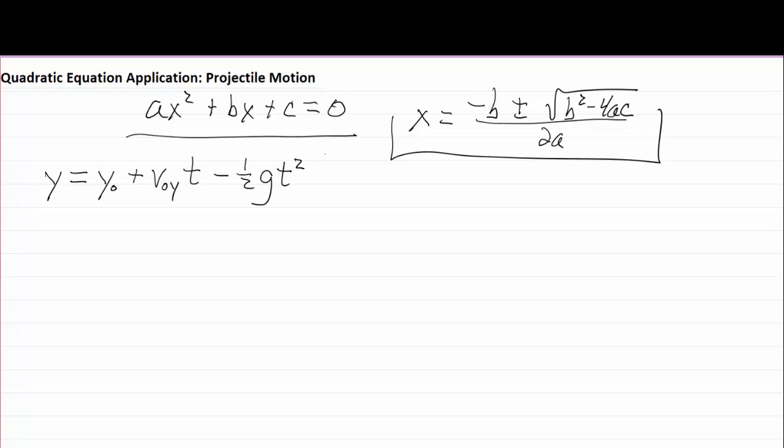But I want to simplify this a bit. First of all the y, the y with a little subscript of 0 on it, the v with a subscript of 0 and a y on it, and the g will all be numbers.